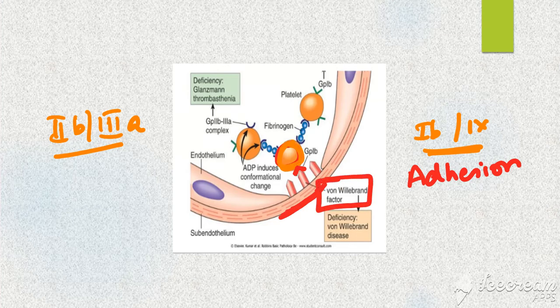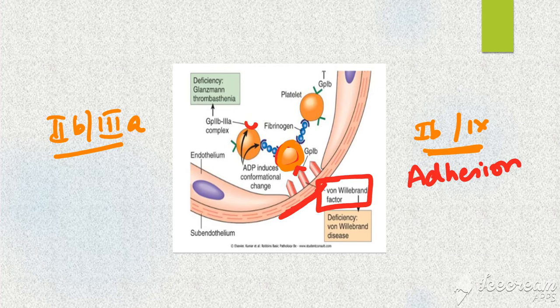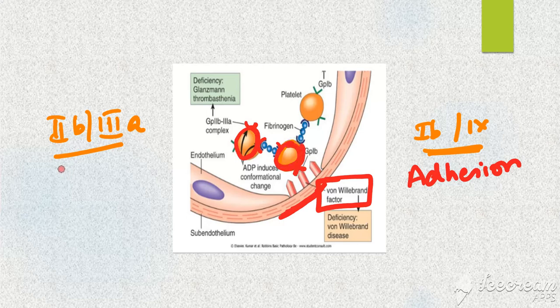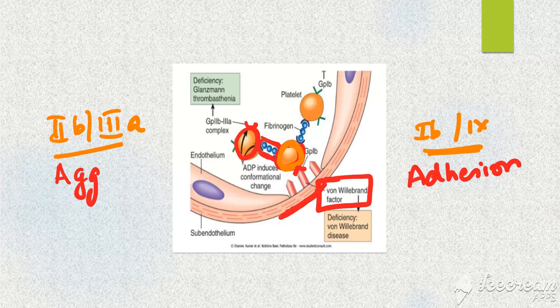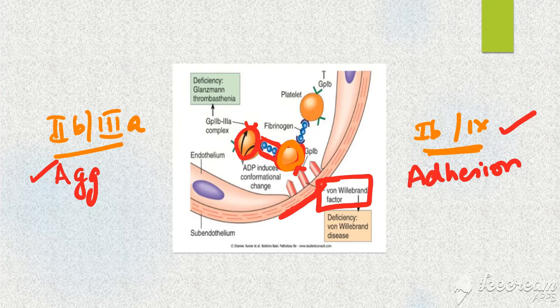Next is 2b3a. This receptor helps in aggregation of two platelets. It brings two platelets together by means of fibrinogen. So 1b9 helps in adhesion, 2b3a helps in aggregation. This is what you should remember: a defect in any of these can lead to prolonged bleeding time with a normal platelet count.